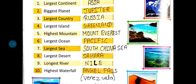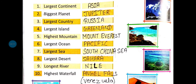Eighth: largest desert — the answer is Sahara, S-A-H-A-R-A. Ninth: longest river — the answer is Nile, N-I-L-E. Tenth: highest waterfall — the answer is Angel Falls, A-N-G-E-L F-A-L-L-S. Angel Falls.